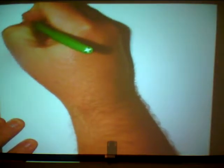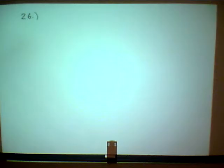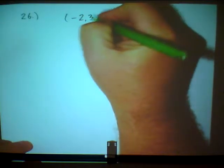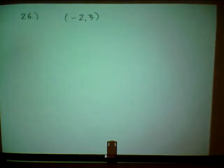They're both similar. It says find six trig functions if the point negative 2, 3 is on the terminal side of the angle theta.